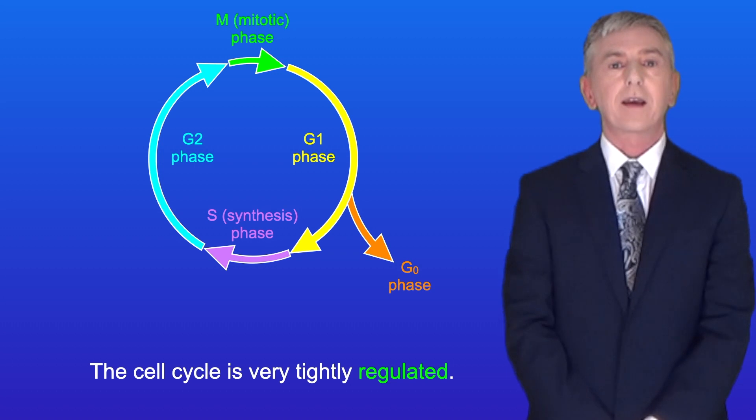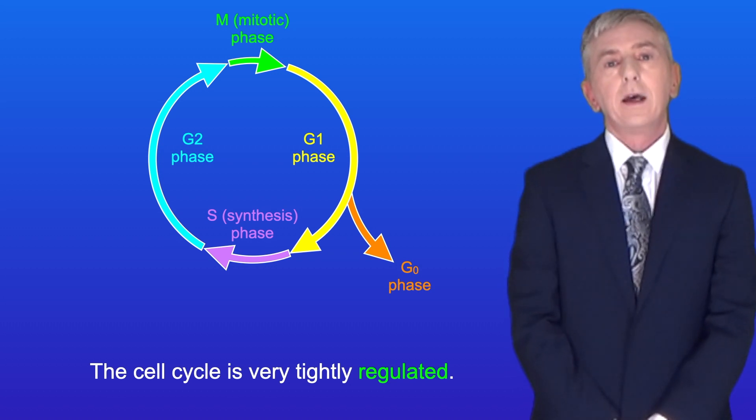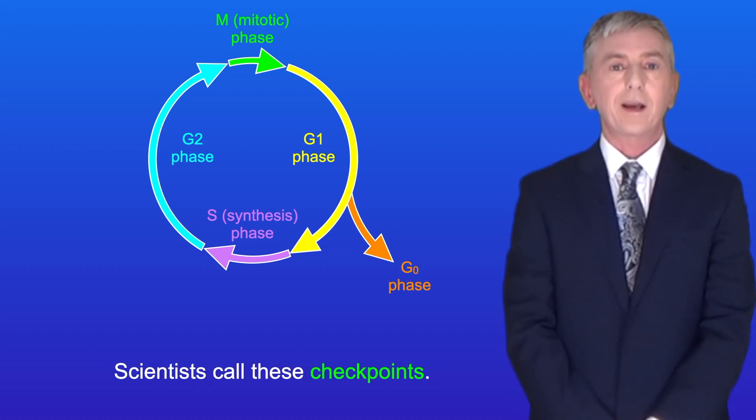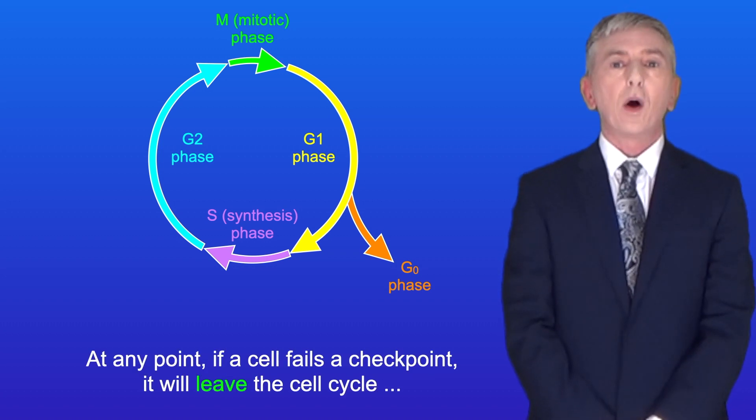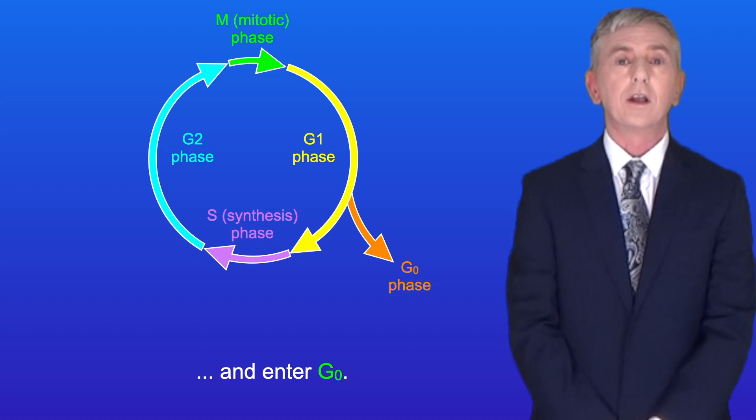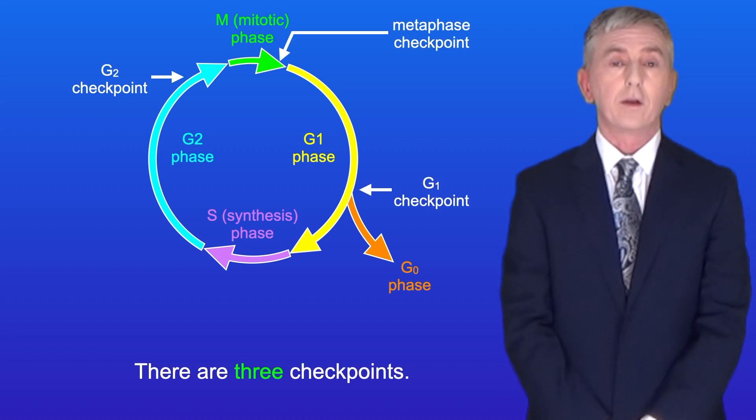The cell cycle is very tightly regulated. At certain key points in the cell cycle the cell checks that the cell cycle should continue. Scientists call these checkpoints. At any point if a cell fails a checkpoint it will leave the cell cycle and enter G0. There are three checkpoints.